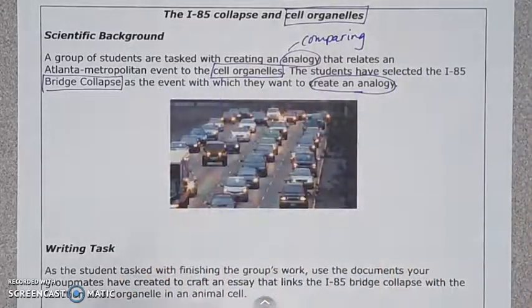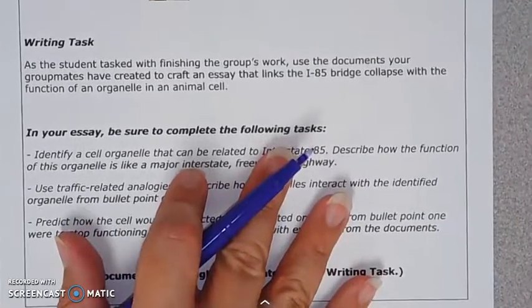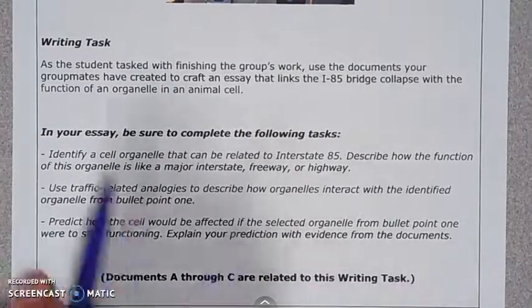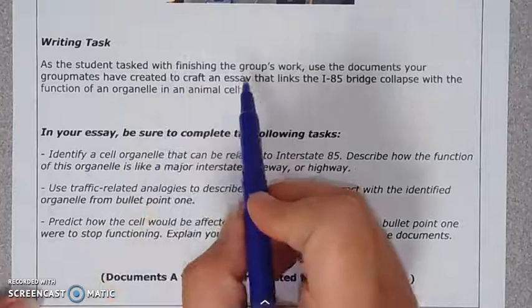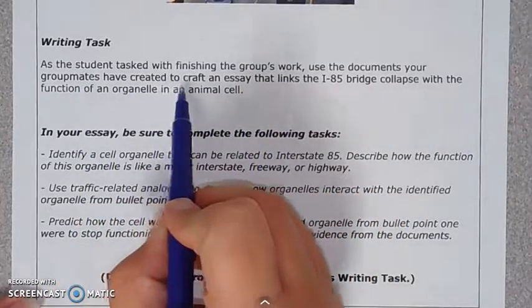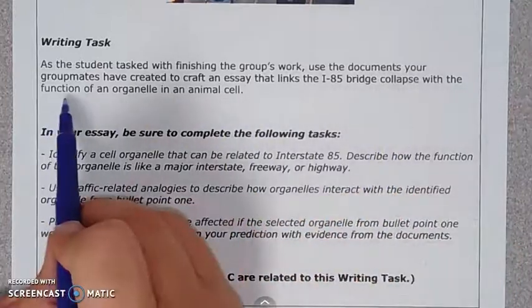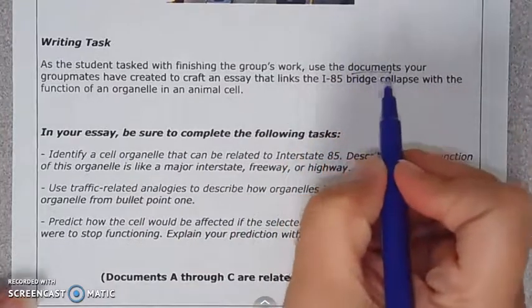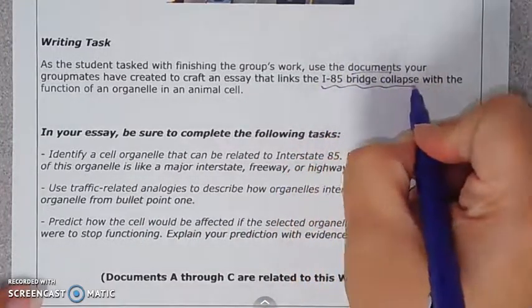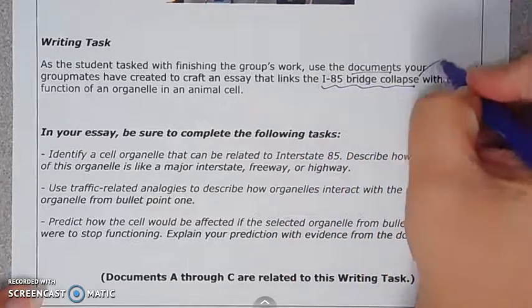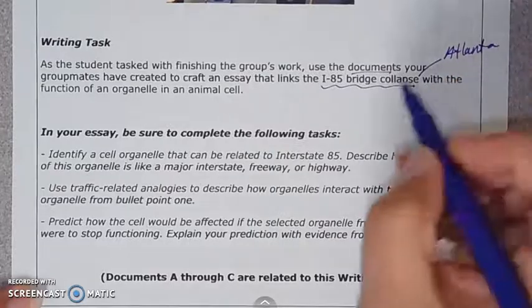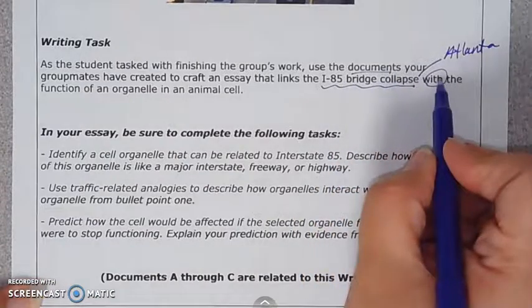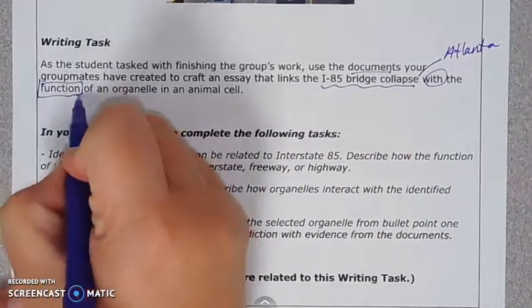Next, go down to the writing task — this is where really important information lives. It says: as the student tasked with finishing the group's work, use the documents your groupmates have created to craft an essay that links the I-85 bridge collapse with the function of an organelle in an animal cell. So I'll be using documents, discussing the I-85 bridge collapse in Atlanta, and comparing it to the function of an organelle.